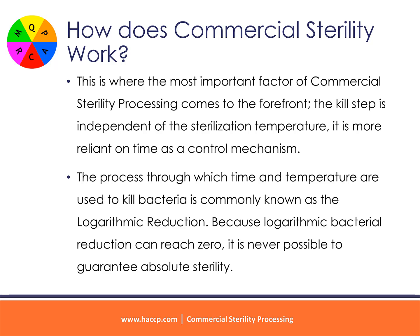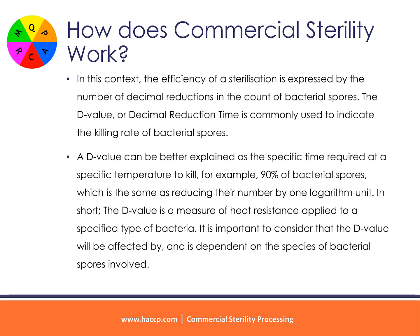The process through which time and temperature are used to kill bacteria is commonly known as logarithmic reduction. Because logarithmic bacterial reduction can reach zero, it is never possible to guarantee absolute sterility. In this context, the efficiency of sterilization is expressed by the number of decimal reductions in the count of bacterial spores. The D value, or decimal reduction time, is commonly used to indicate the killing rate of bacterial spores. A D value can be better explained as the specific time required at a specific temperature to kill, for example, 90% of bacterial spores — reducing their number by one logarithm unit.